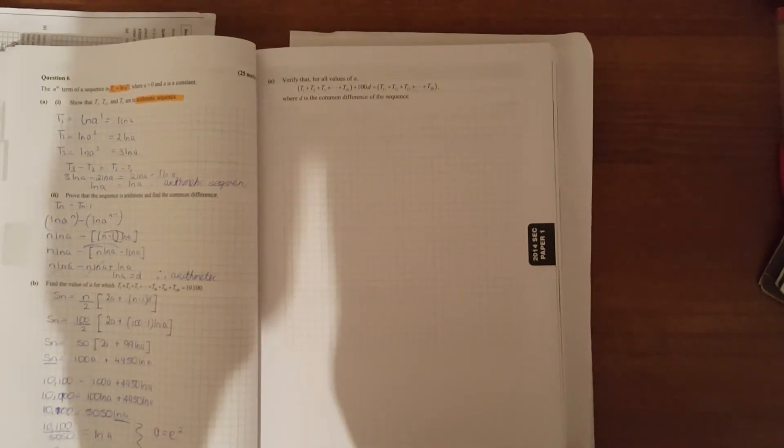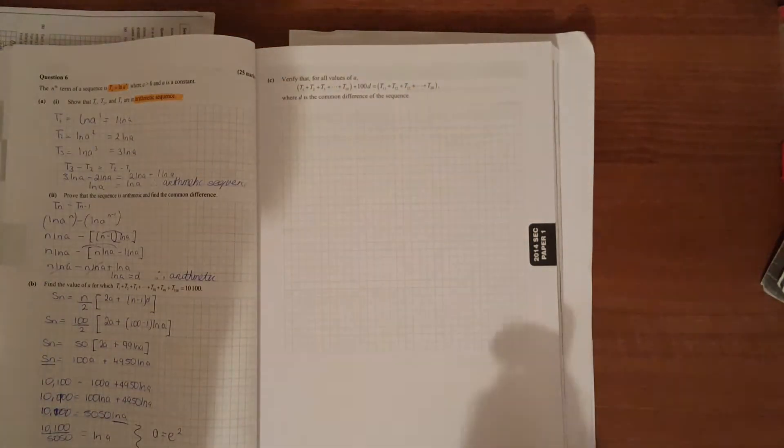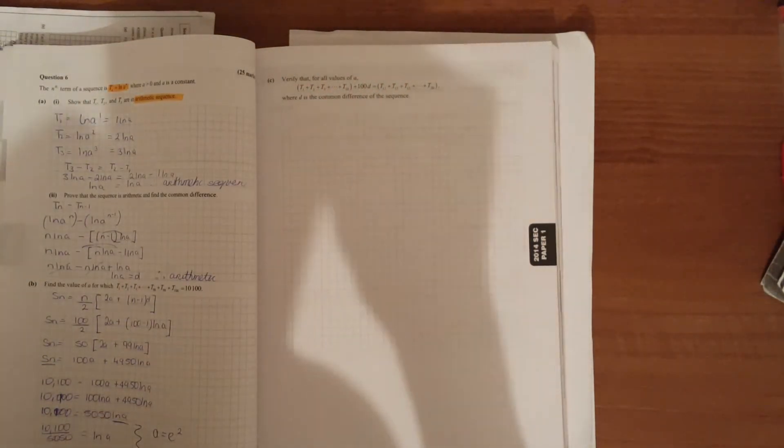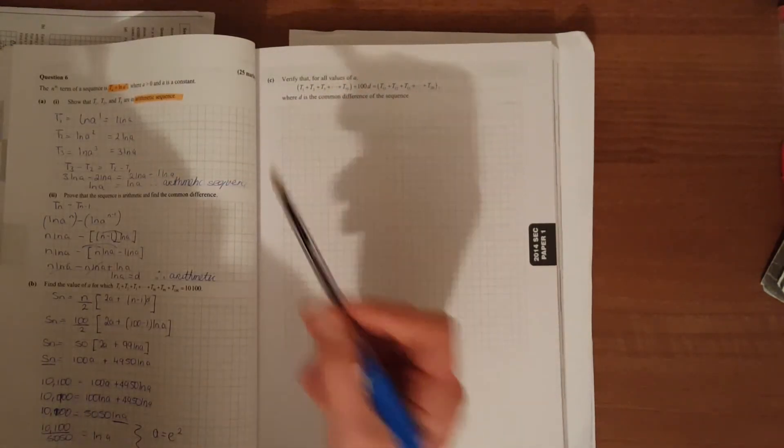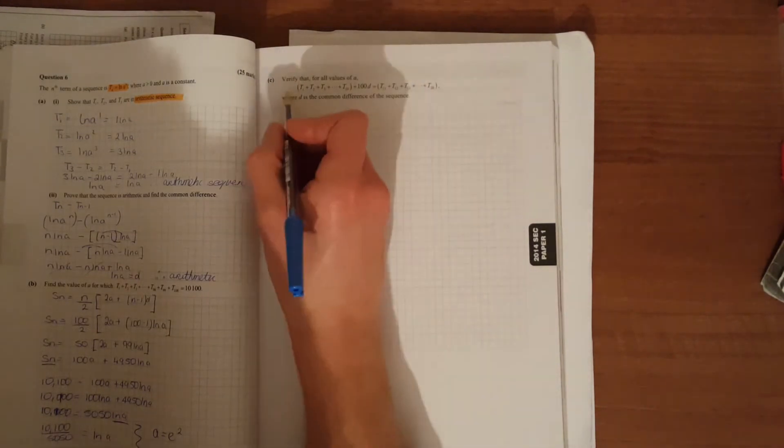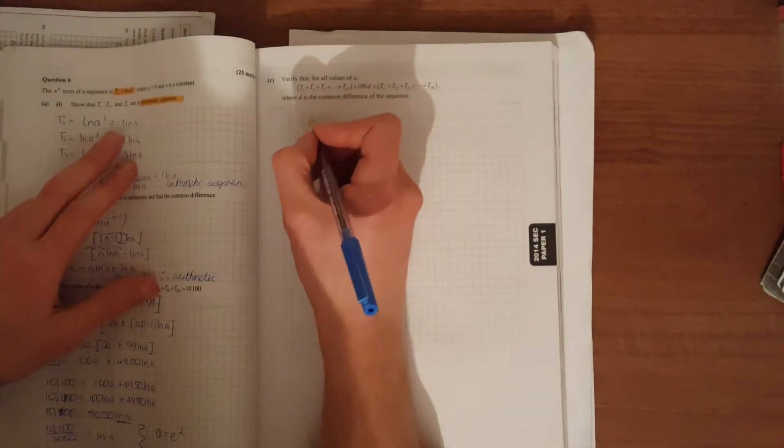The last bit of this question: verify that for all values of a, t1 through t10 plus 100 times the common difference ln(a) equals t11 to t20, where d is the common difference. So t1 all the way to t10 is 1·ln(a) plus 2·ln(a) plus 3·ln(a) up to 10·ln(a).